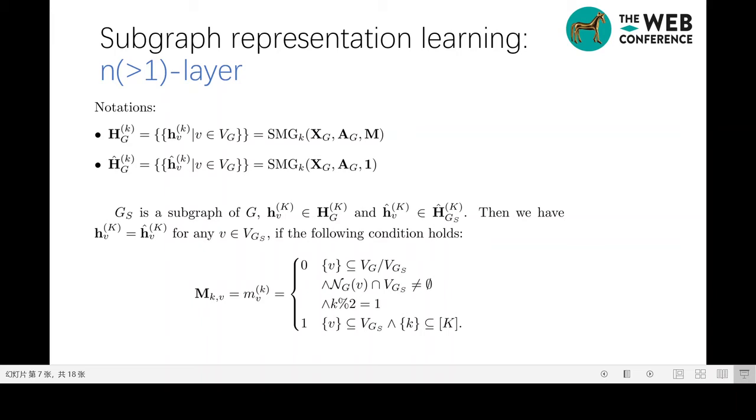However, node mask assignments in different layers have an effect on the final representation. Node masks in some layers can take arbitrary values. Here we give all the necessary mask assignments for learning the given subgraph representation. And the proofs are given in the paper. According to the above conclusion, we can extract any desired subgraph in the learned representation by properly assigning the matrix M. Similarly, the problem of extracting the desired subgraph is converted to finding the assignments of M. Since different M leads to a different subgraph sequence, and M is not unique for the given subgraph, the required subgraph representation may correspond to a group of subgraph sequences.